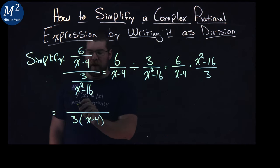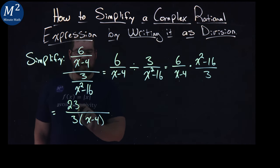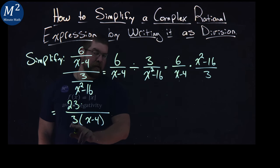The 6, I'm going to write as 2 times 3 instead of 6 right here, mainly because I have a 3 here, I probably can cancel it.